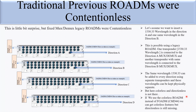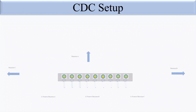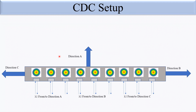If we use the colorless ROADM instead of a fixed CMD 4x4, we can get colorless features, but directionless is still missing. In the CDC setup in a DWDM system, all ports are colorless, meaning any port can receive any lambda.